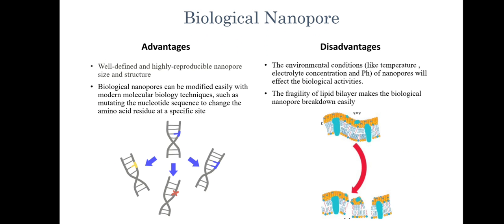The advantages include well-defined and highly reproducible nanopore size and structure, and they can be easily modified by modern technology techniques such as mutating the nucleotide sequence. The disadvantages include environmental conditions such as temperature, electrolyte concentration, and pH of the nanopore affecting the biological activities. Also, the fragility of the lipid bilayer makes the biological nanopore breakdown easily.